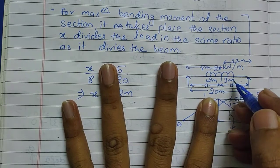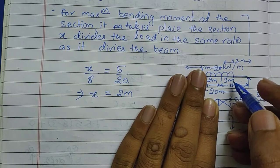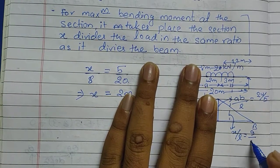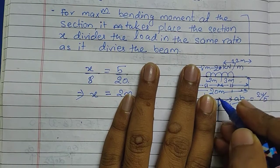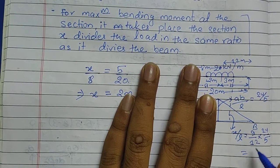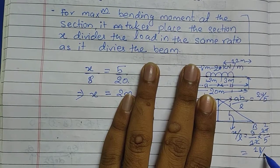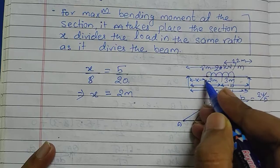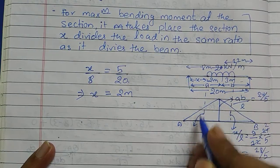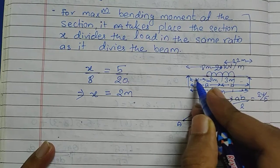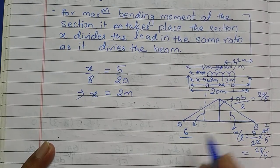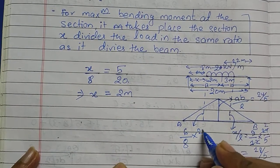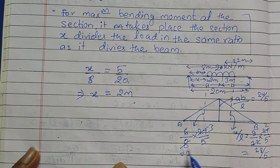For the first ordinate, X equals 8 minus 3 equals 5 — wait, this gives 9 — divided by L which is 20, multiplied by the main ordinate 24/5, giving 18/5. For the second ordinate, X is 6 meters (since the 2-meter portion gives X = 8 minus 2 = 6), so X by L times 24/5, which is 6/8 times 24/5, also giving 18/5.